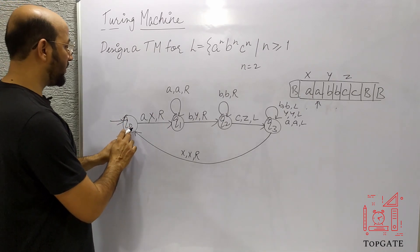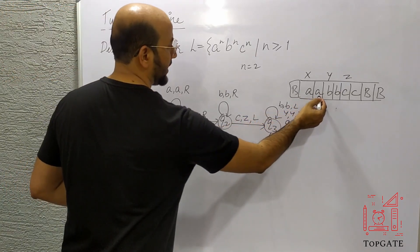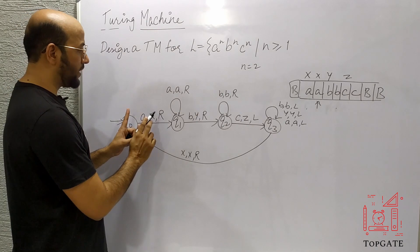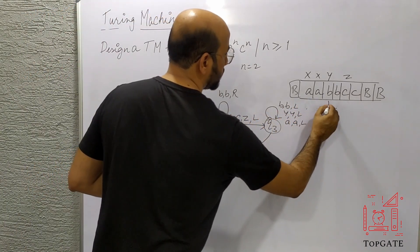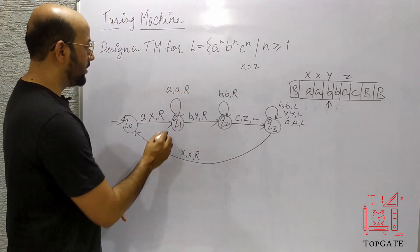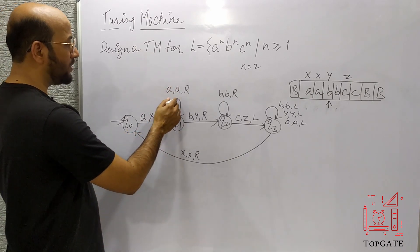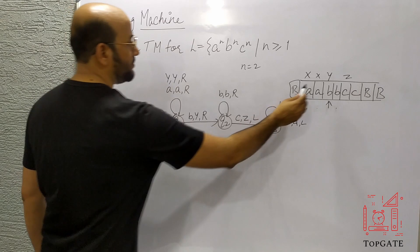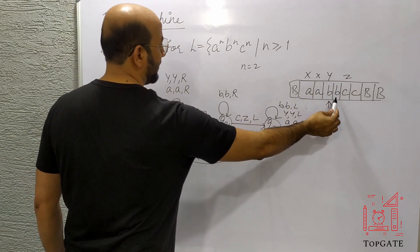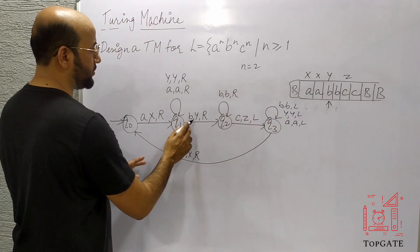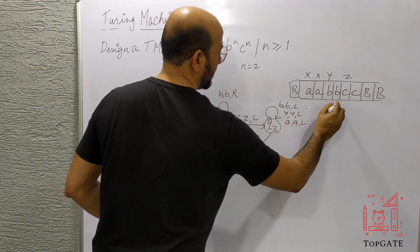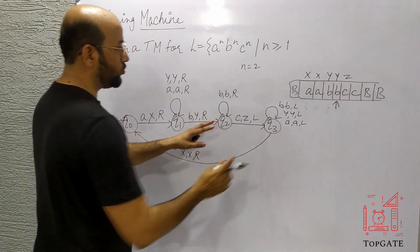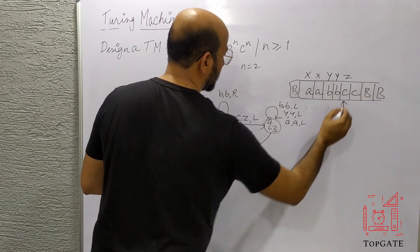At Q0, the machine knows if you find A, change it to X. This A is changed to X and we move right to find the pair — B and C. The pointer now points to Y. At Q1 we don't have a move for Y, so I add a self-loop: Y stays Y and moves right. We skip this Y, then find the B, which is changed to Y and we move right to state Q2.